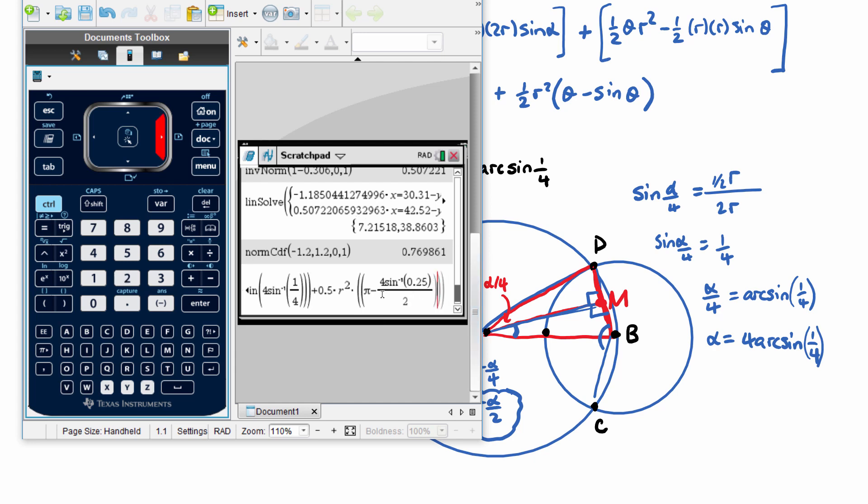So that, and then it was, so that was theta, minus sine. And theta, now theta is pi minus alpha on 2. Alpha is 4 arc sine 0.25, all over 2. And at the end here I'm going to put comma R.